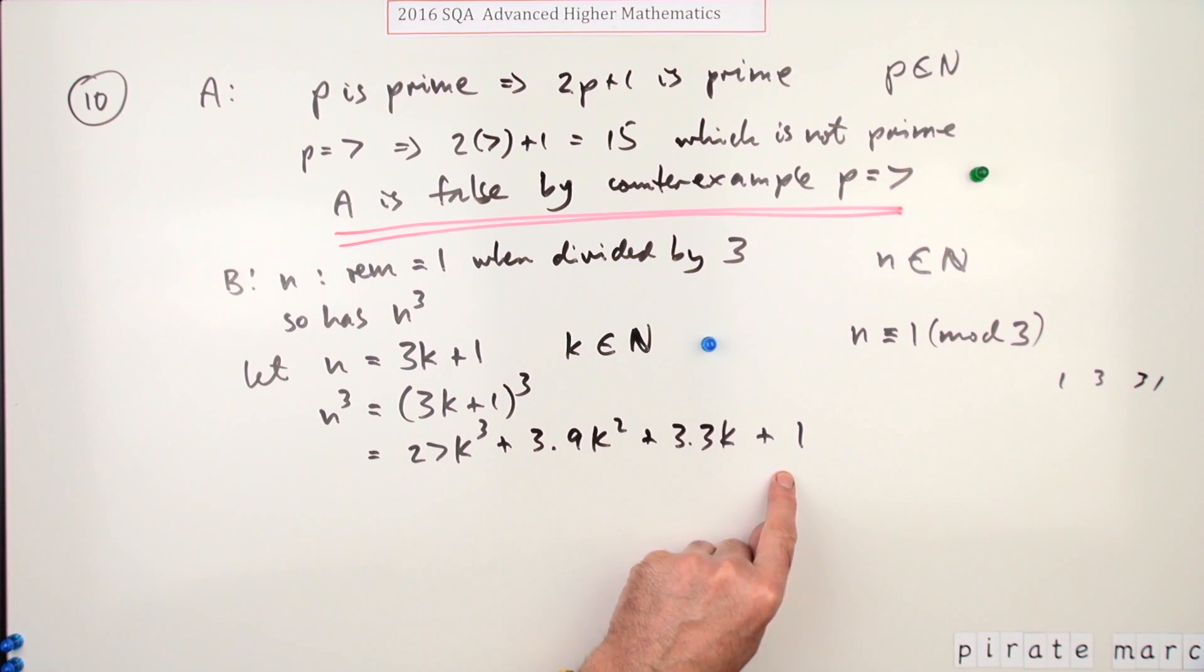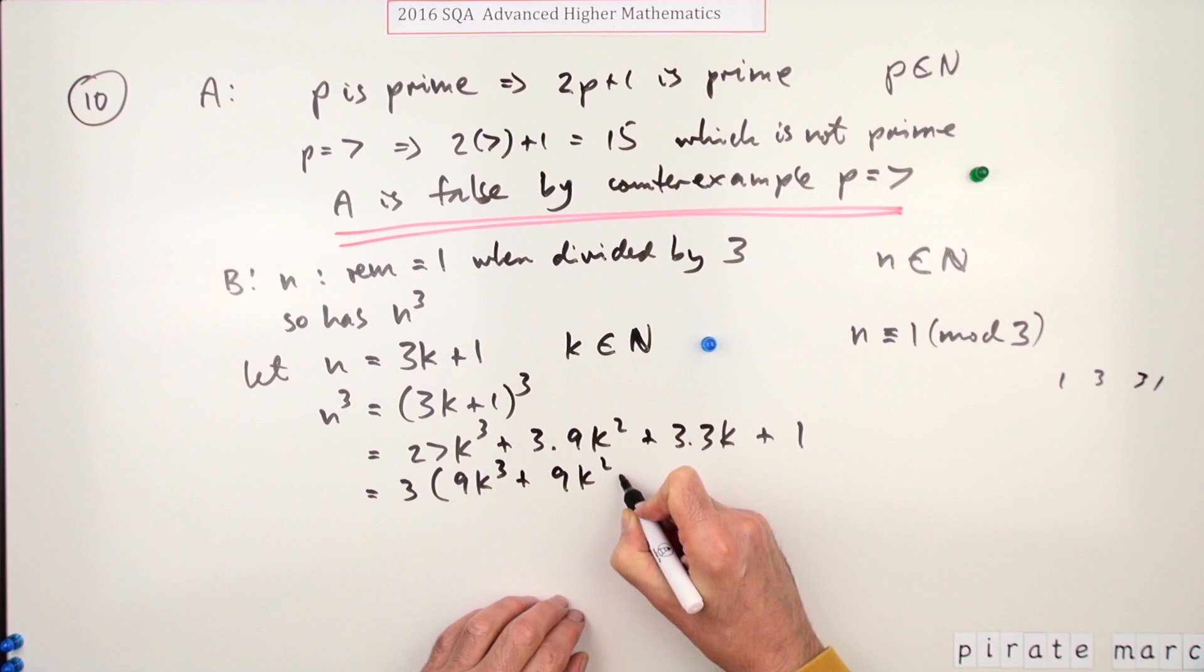Now you have to express this as having one left over when you divide it by three. So if you can show that this part is a multiple of three, just take three out of it: that's 9k³ + 9k² + 3k, and leave a one at the end. That quite clearly is of the required form.